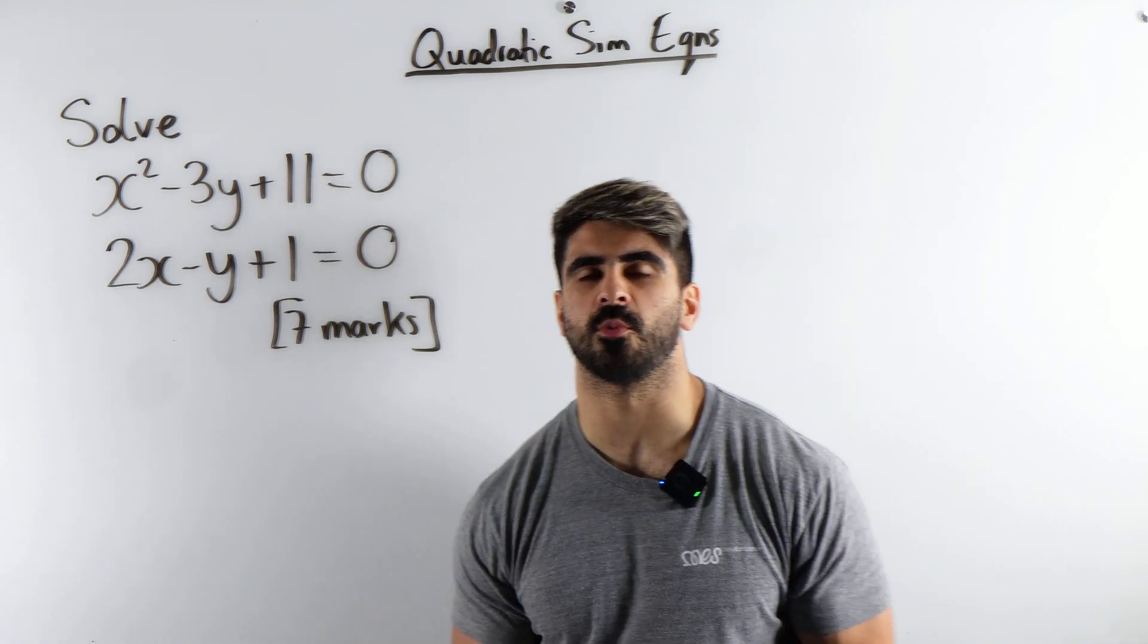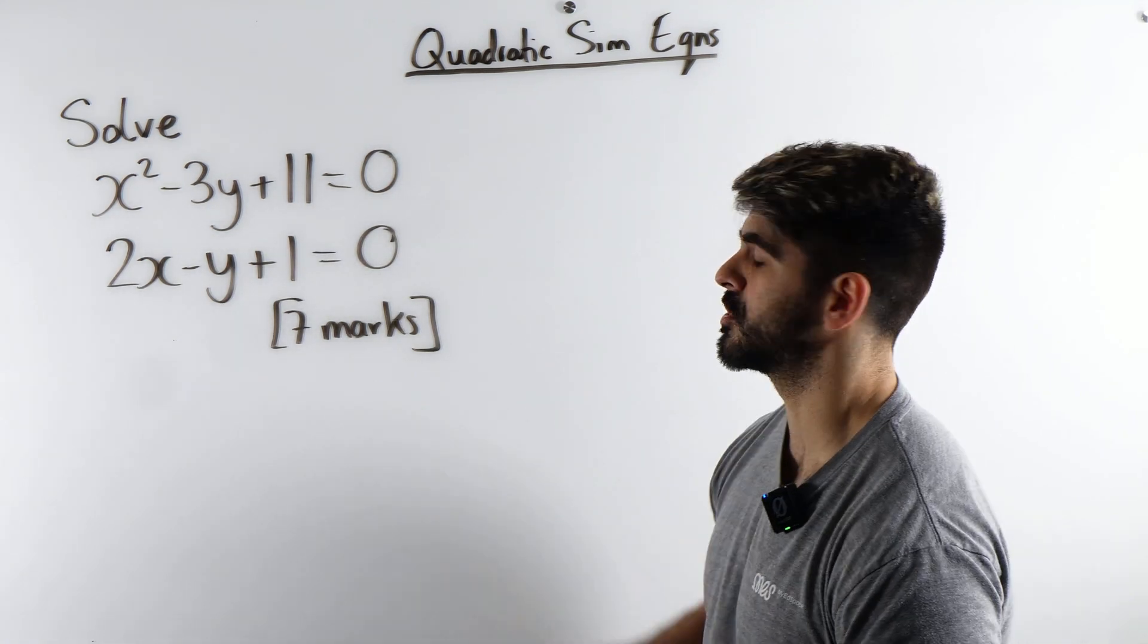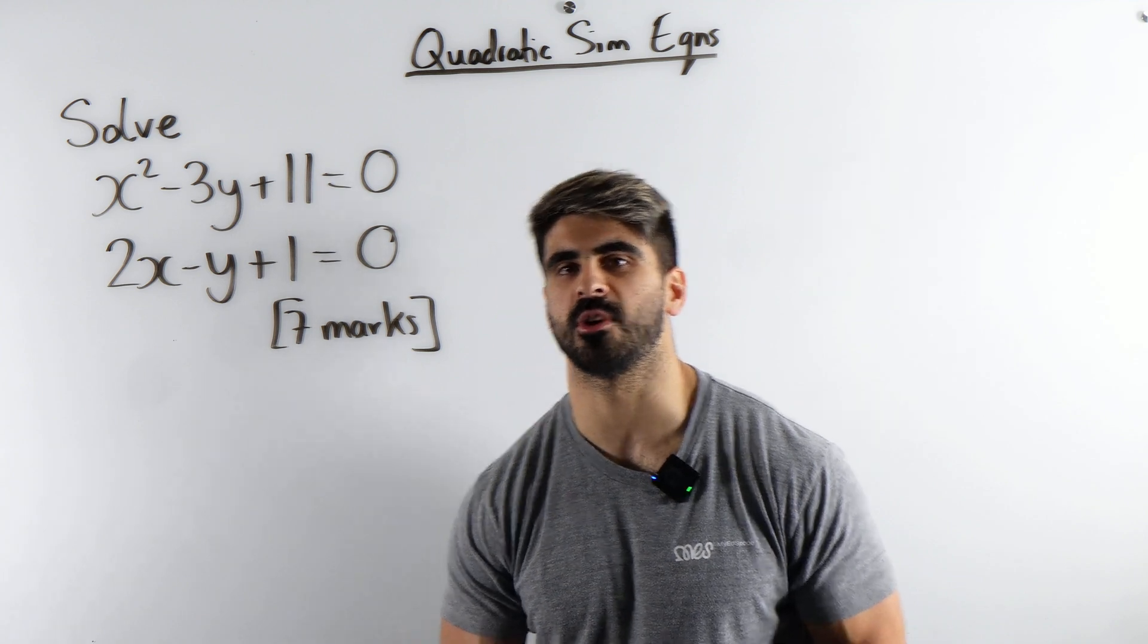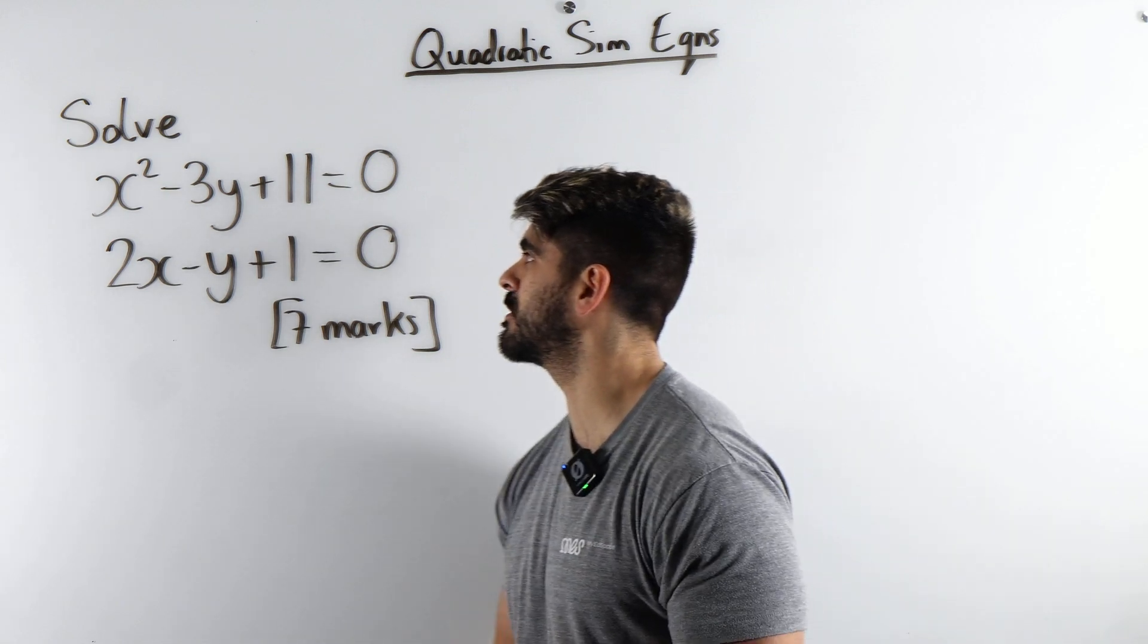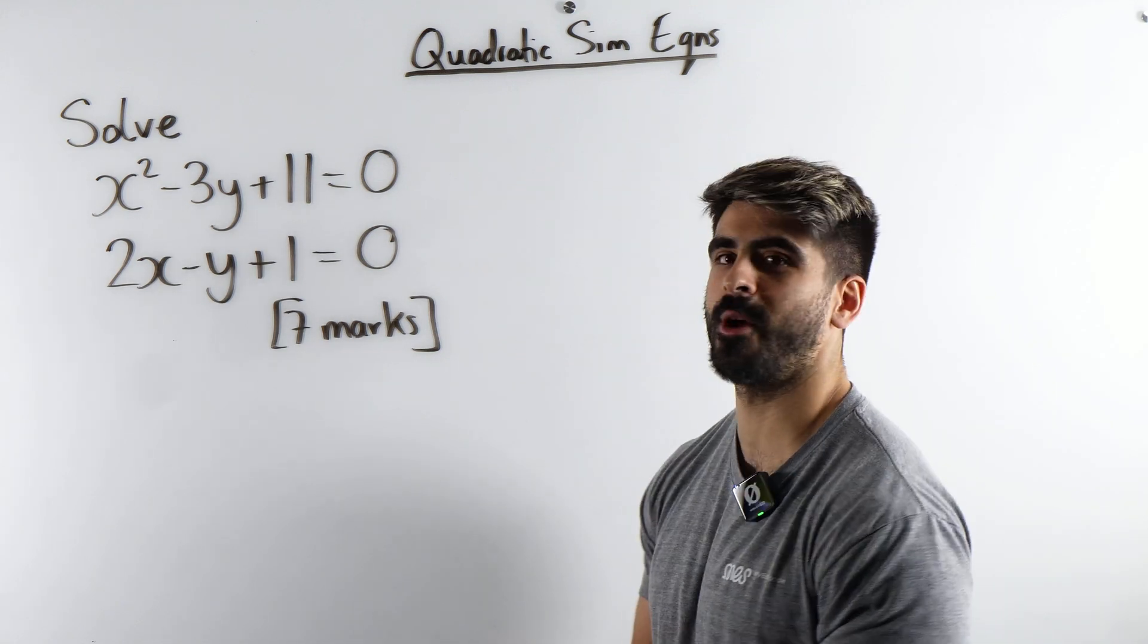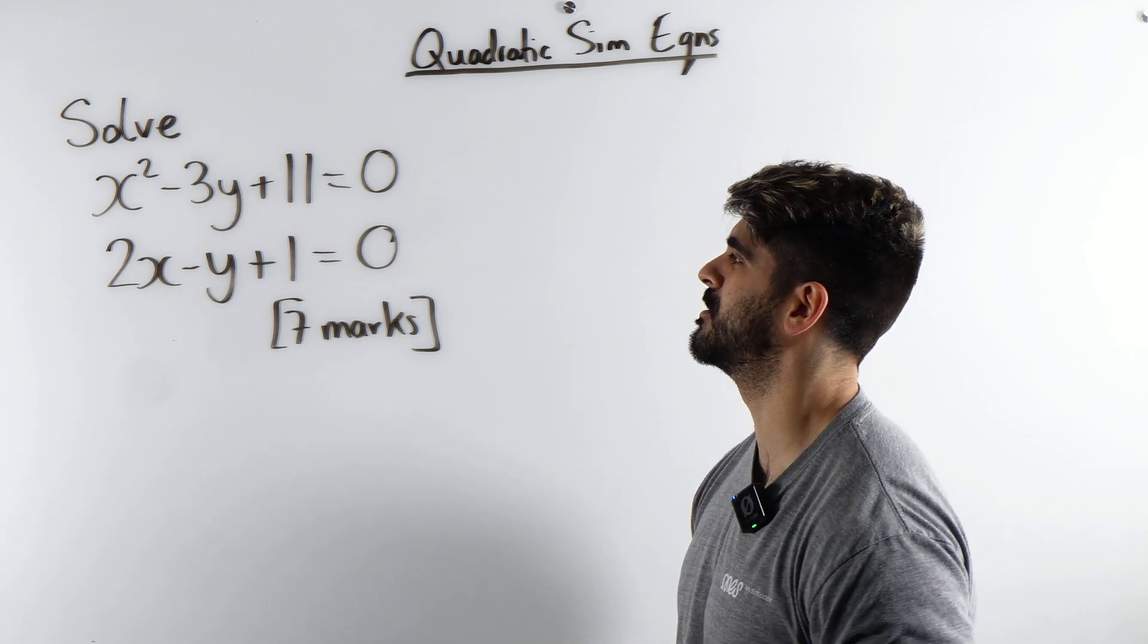If you're a GCSE student and your goal is to one day work at Argos, you need to know how to answer this quadratic simultaneous equations question. Seven marks. Solve x squared minus 3y plus 11 equals 0, and 2x minus y plus 1 equals 0.